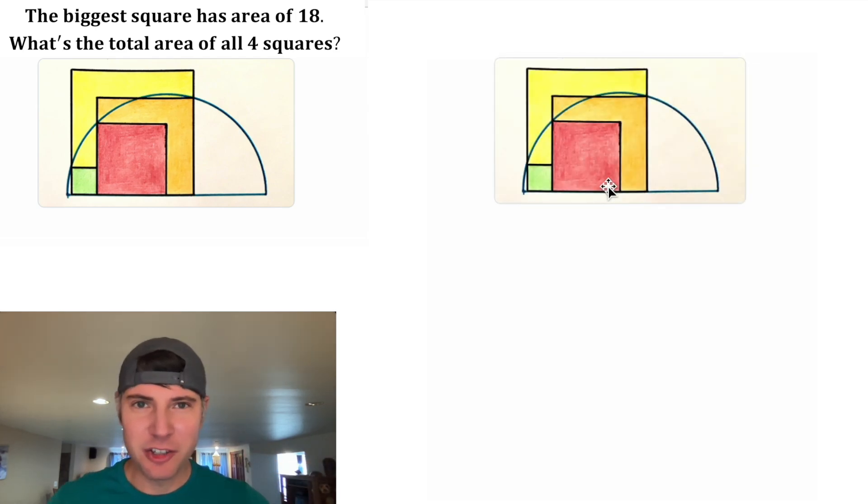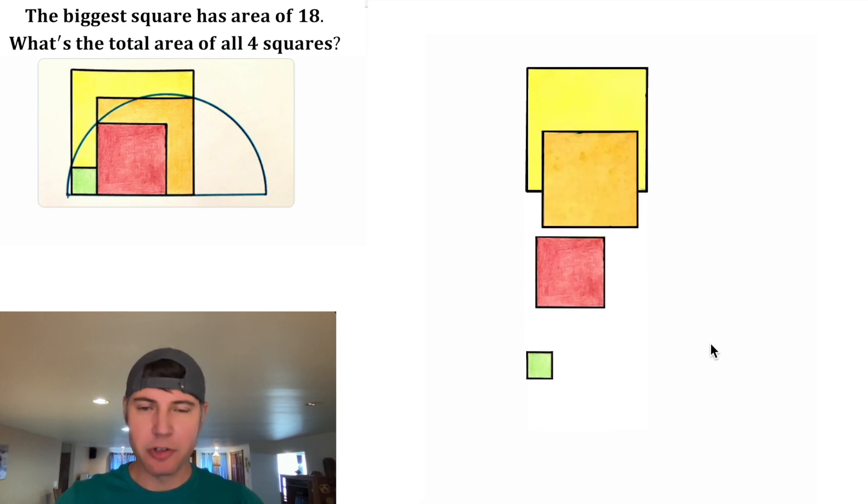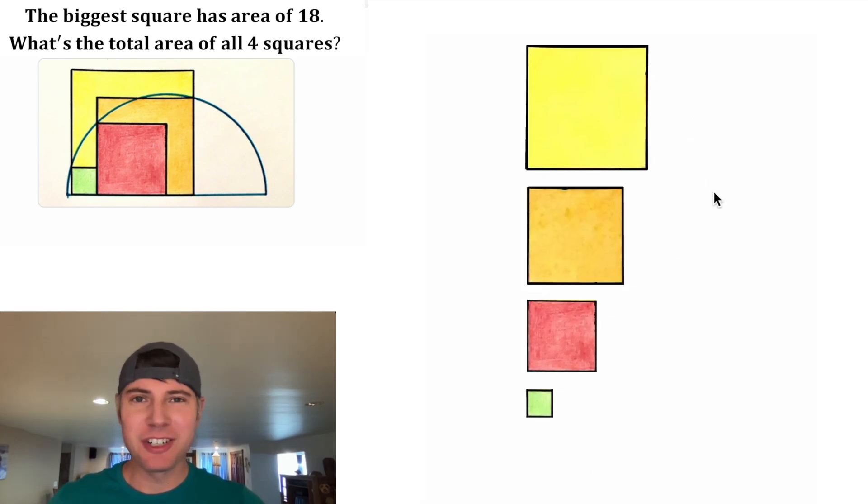First, I want to look at the squares. These squares are all stacked on top of each other. Let's pull out this green one, the red one, and the orange one. And here are the four squares they're talking about. It tells the largest one has an area of 18 and we don't know the areas of the other ones.